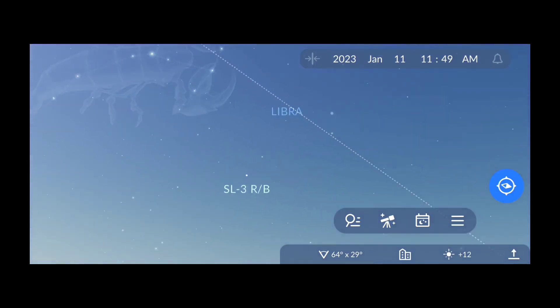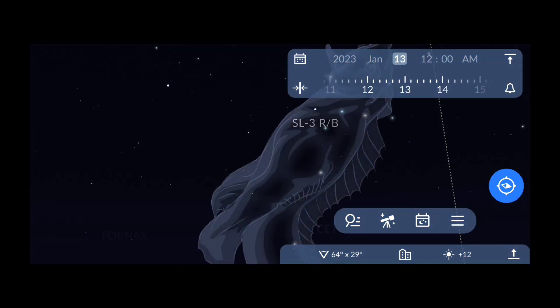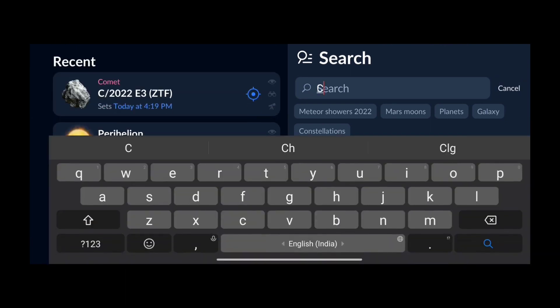After opening the application, you have to set date and time from the top right side. Once it is done, you have to click on the search option and then type Comet C2022E3 and click on it.